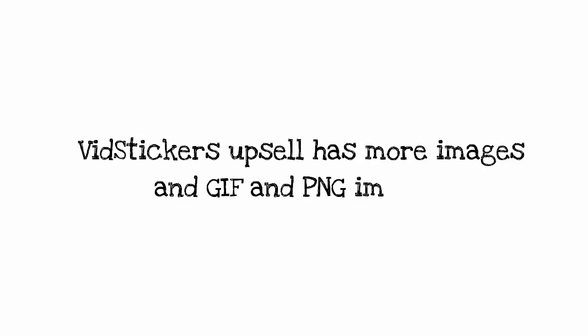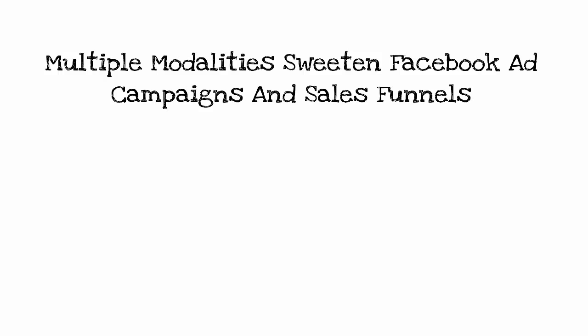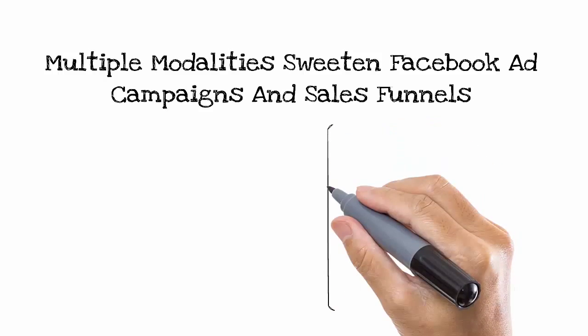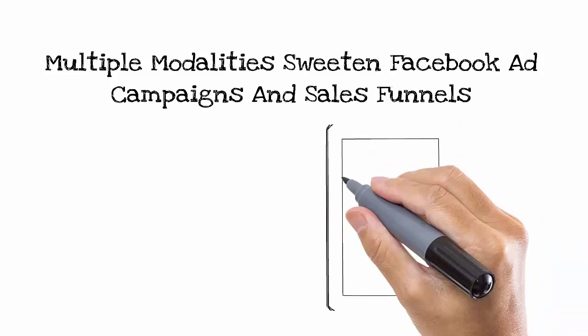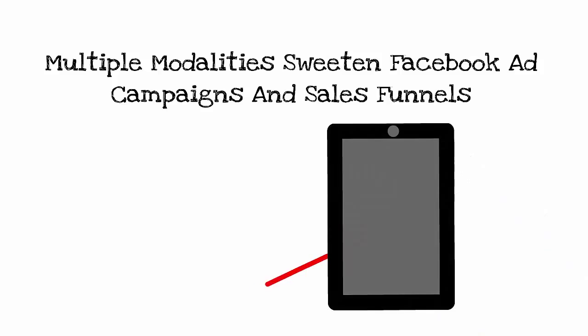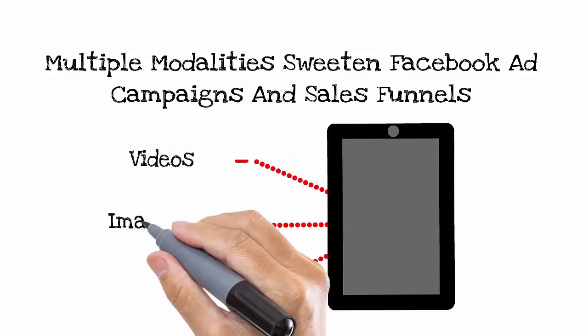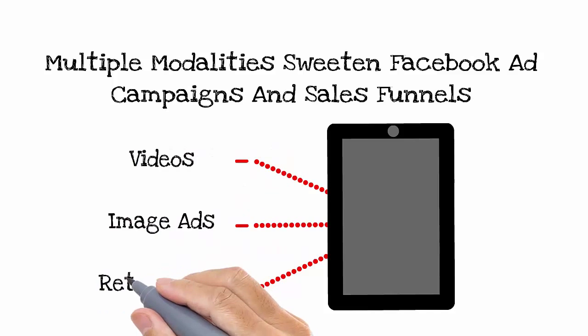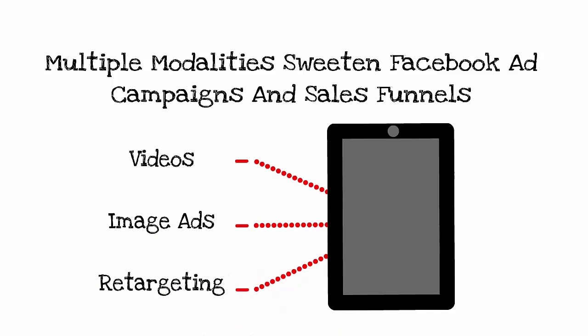VidStickers has an even more delicious upsell offer with more animations and additional file types — GIF files and static images — and that expands your possibilities for working with multiple modalities when you're creating Facebook ad campaigns. For instance, I like to start a new campaign with a video ad, let Facebook create my custom audiences, and then retarget those audiences with an image-based ad. When you have visually matching assets you can develop native ads, and those are proving to be highly effective when you're building a sales funnel.